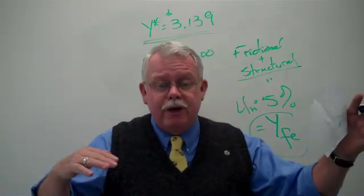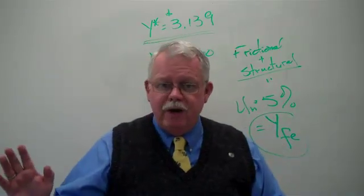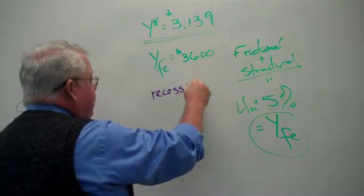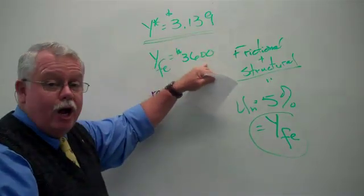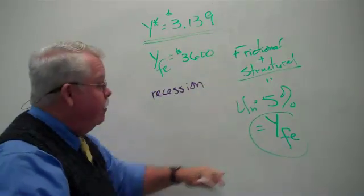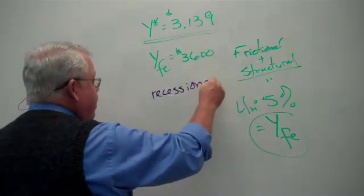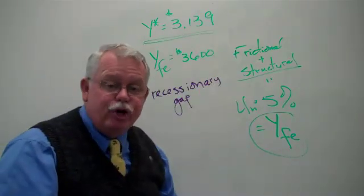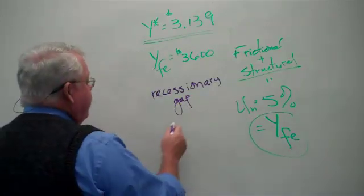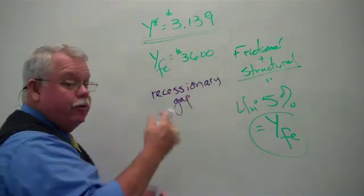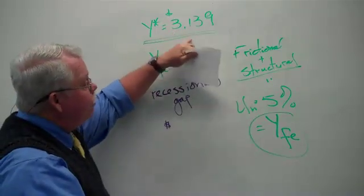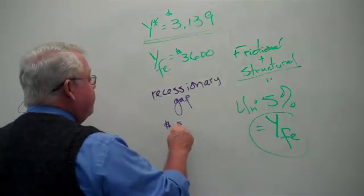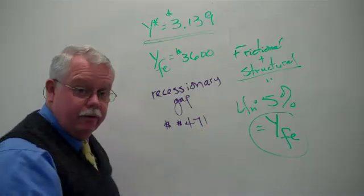Now, if you have too little spending like we have here, you have a recession. You haven't created enough jobs for everybody to have a job. And in fact, you have a recessionary gap. Many textbooks call it a deflationary gap. Same thing. And we can measure it in terms of dollars. The deficiency between where we are and where we need to be, 3600 minus 3139. What do you get? The deficiency is $471. See that?